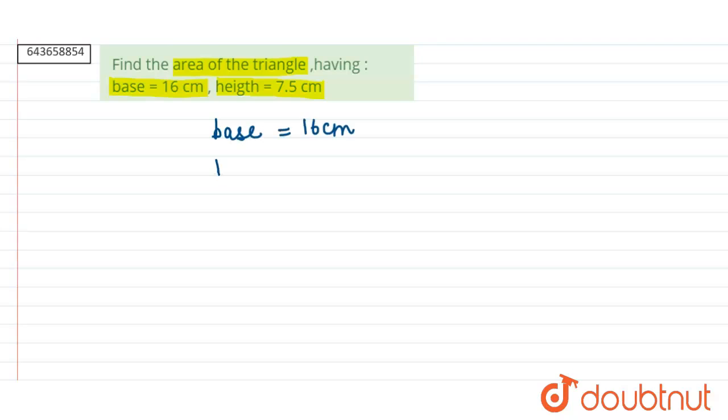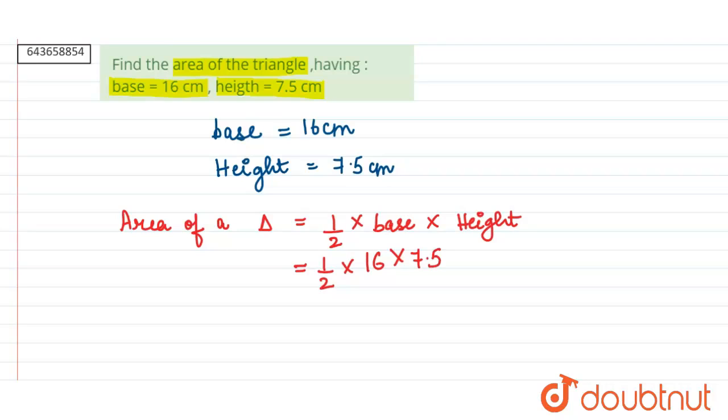Base is equal to 16 cm. Height is equal to 7.5 cm. Area of a triangle is equal to half into base into height which is equal to half into 16 into 7.5.